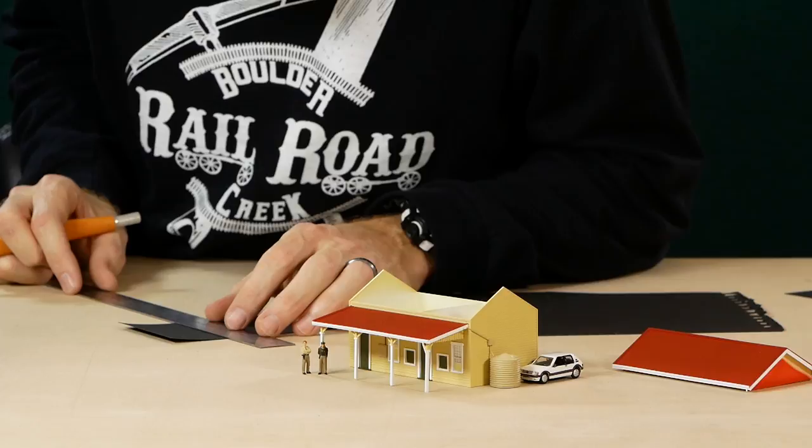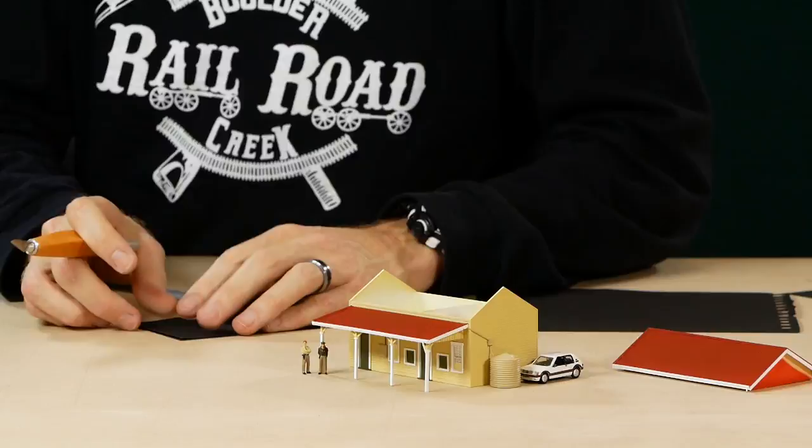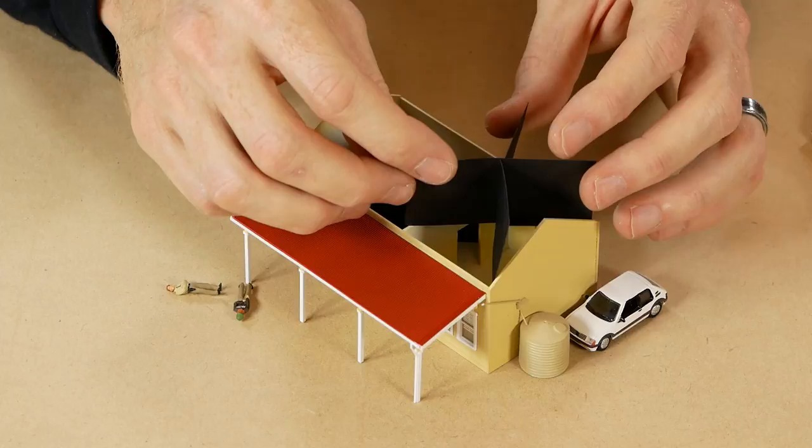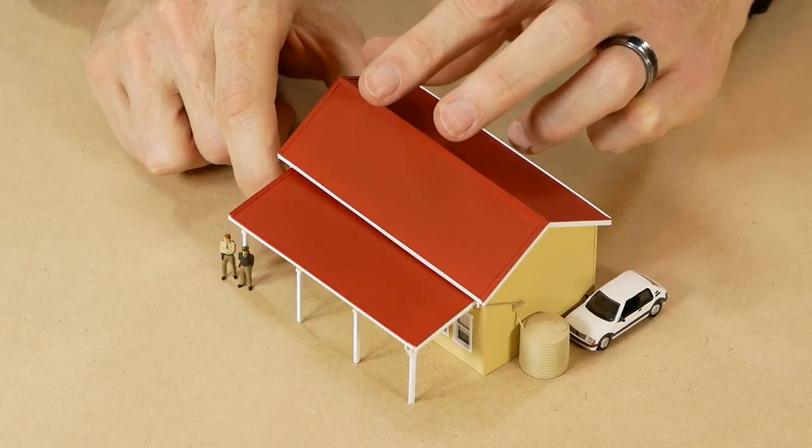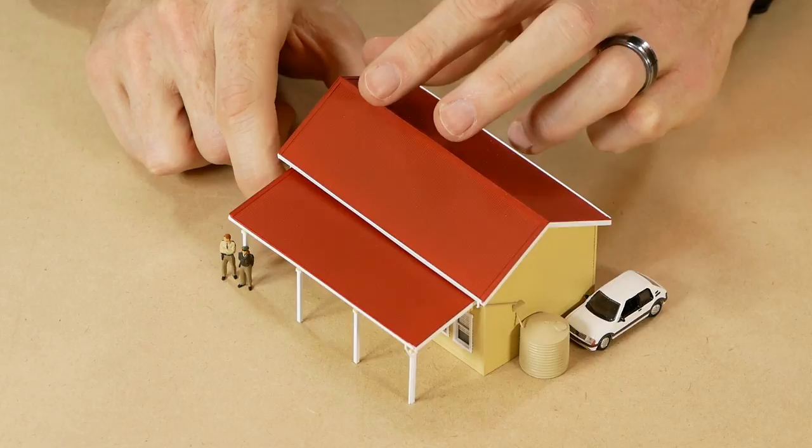Because I won't be adding an interior just yet I don't want to be able to see right through the model so I use some black paper cut to size that will be used as a view block inside the building. Now all we need to do is put the roof back on and we can call it a day.